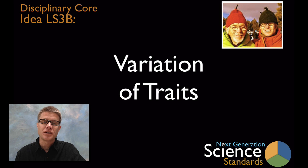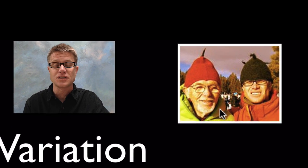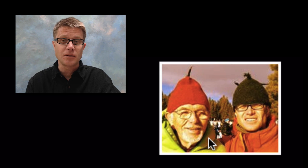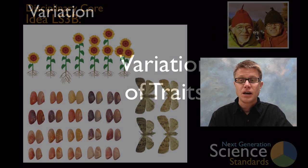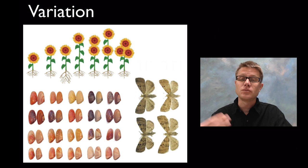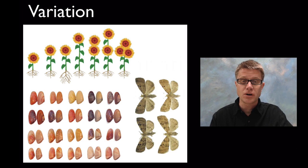Hi, it's Paul Anderson and this is disciplinary core idea LS3B on variation of traits. In this picture you see me and my father, both wearing silly looking hats. If you look at us, we don't look exactly the same. There are clearly some similarities, but we're not clones of one another. I owe a lot of that to DNA and inheritance of traits.